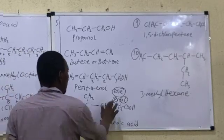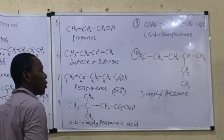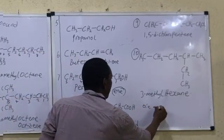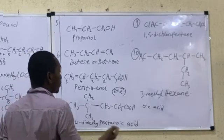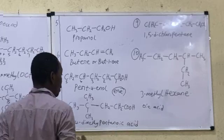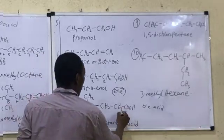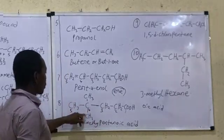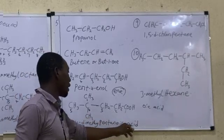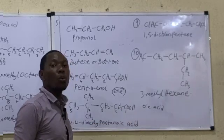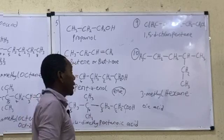The next compound carries a carboxylic acid (COOH) functional group, belonging to the alkanoic acid homologous series. Always pick the longest chain as the parent chain — counting from the COOH end gives 5 carbons. We have two methyl groups at carbon 4, giving 4,4-dimethyl. With 5 carbons and the COOH group, this is pentanoic acid. The full name is 4,4-dimethylpentanoic acid.